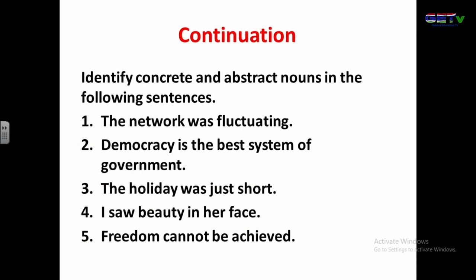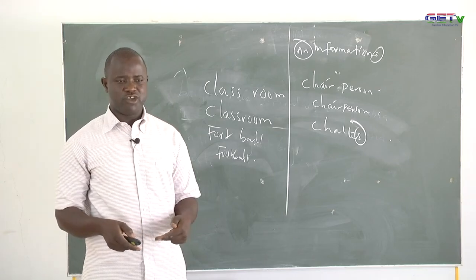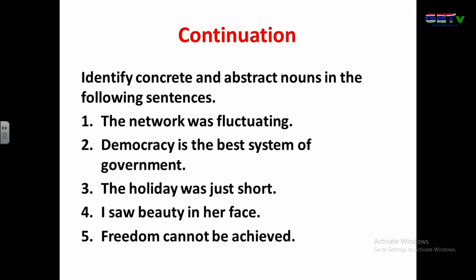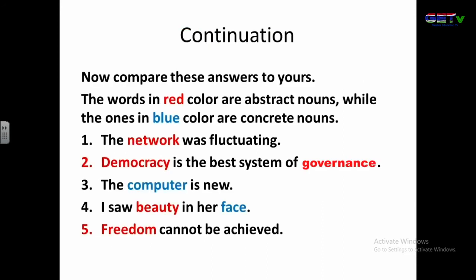Now identify concrete and abstract nouns. 'The network was fluctuating' — abstract noun: network, because you cannot see it. 'Democracy is the best system of government' — abstract nouns: democracy and government, because we cannot see them. 'I saw beauty in her face' — beauty is abstract; face is concrete because you can see and touch it. 'Freedom cannot be achieved' — freedom is an abstract noun; it cannot be seen.